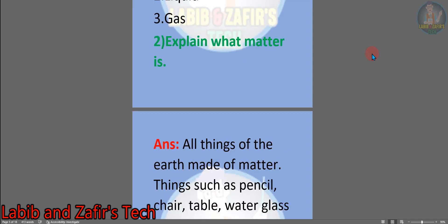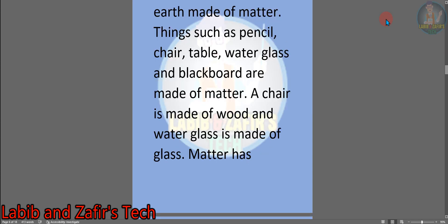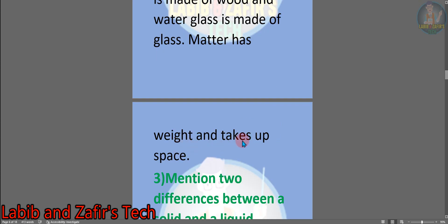Number 2: explain what matter is. Answer: all things of the earth are made of matter. Things such as pencil, chair, table, water glass and blackboard are made of matter. A chair is made of wood and a water glass is made of glass. Matter has weight and takes up space.